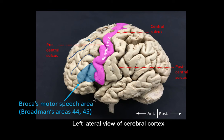Another important sulcus to know in the context of Broca's motor speech area is this lateral sulcus, because the Broca's area is closely associated with it. You can see the lateral sulcus has different rami: this is the anterior horizontal ramus, this would be the anterior ascending ramus, and then the lateral sulcus continues backwards as the posterior ramus of the lateral sulcus.